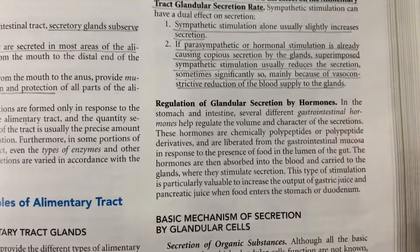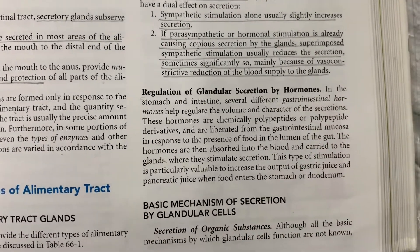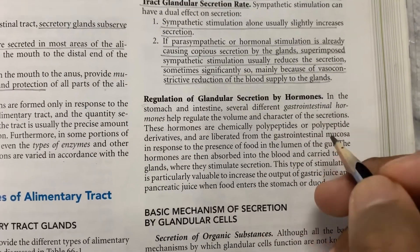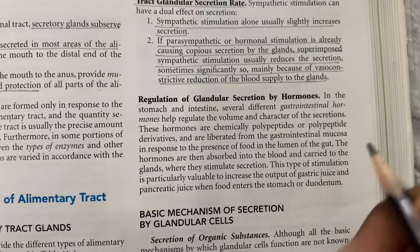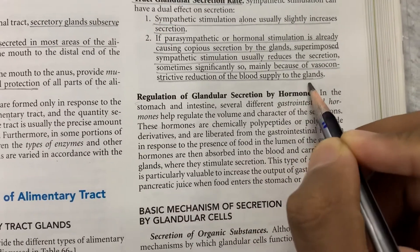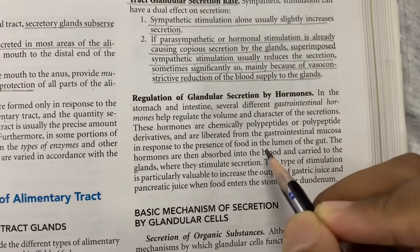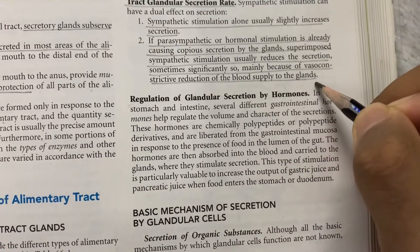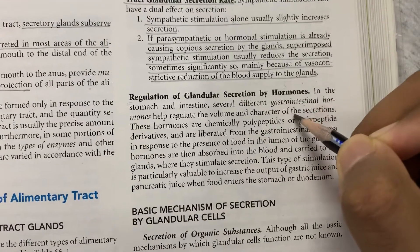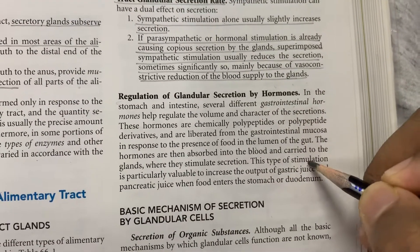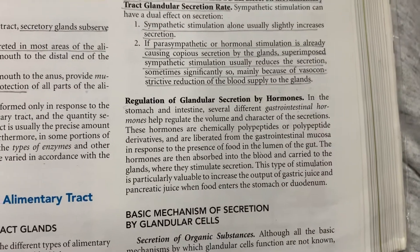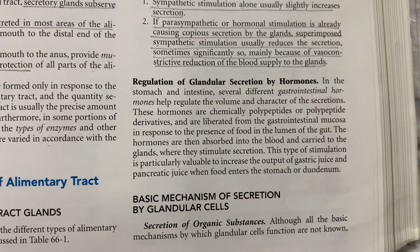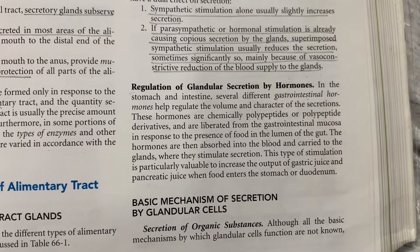Coming to regulation of secretion by hormones: in the stomach and intestine, several different GIT hormones, which are polypeptides in nature or their derivatives, are liberated from the gastrointestinal mucosa in response to the presence of food in the lumen of the gut. These hormones are reabsorbed into the blood and carried to the gland where they stimulate secretion. This type of stimulation is particularly valuable to increase the output of gastric juice and pancreatic juice when food enters the stomach or the duodenum.